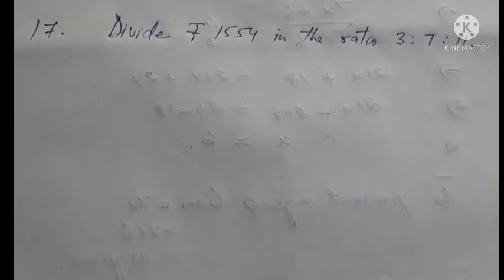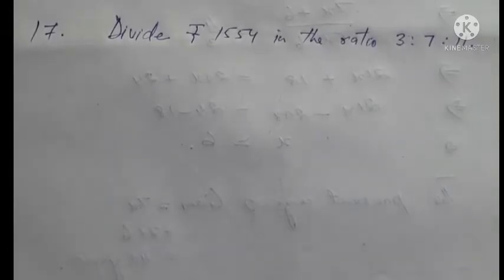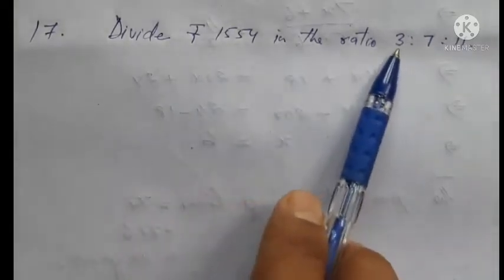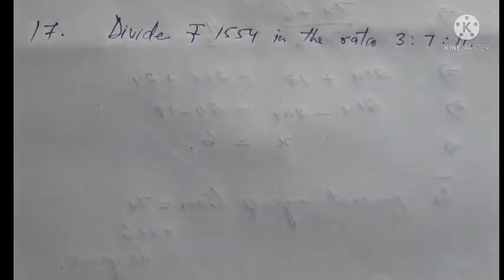Question number 17. Divide 1,554 rupees in the ratio 3 is to 7 is to 11. Let me set up the solution.